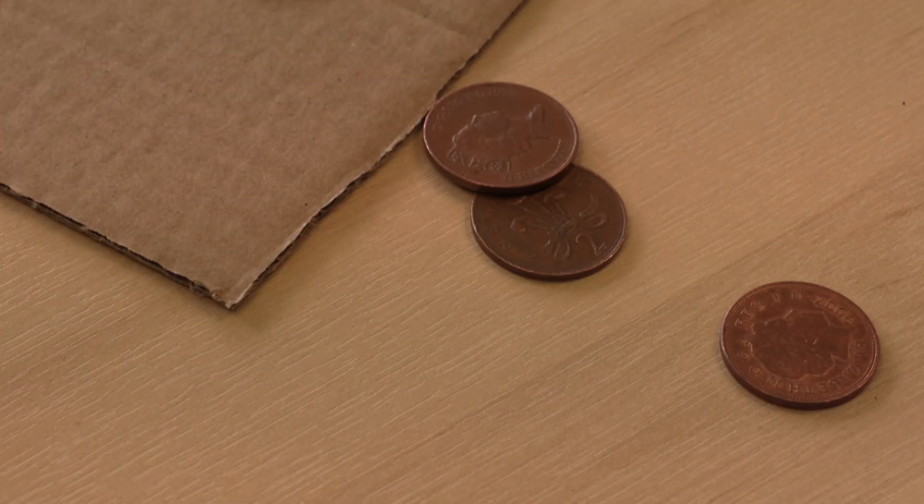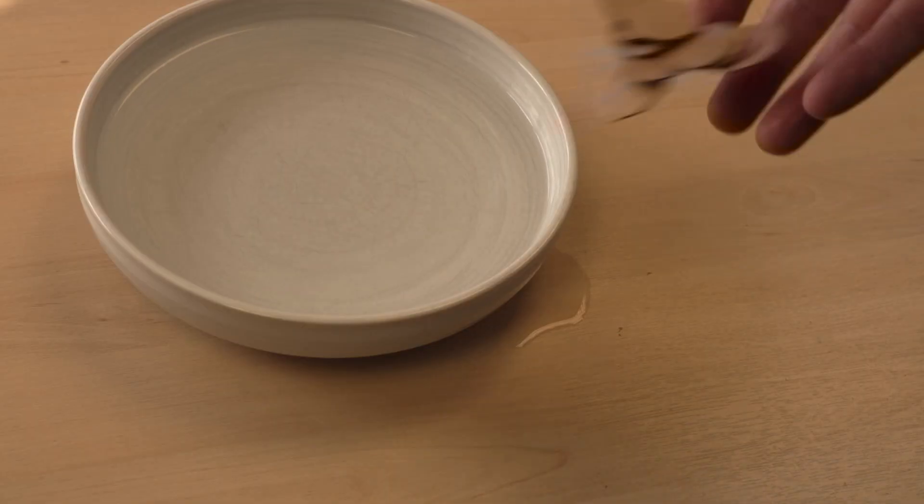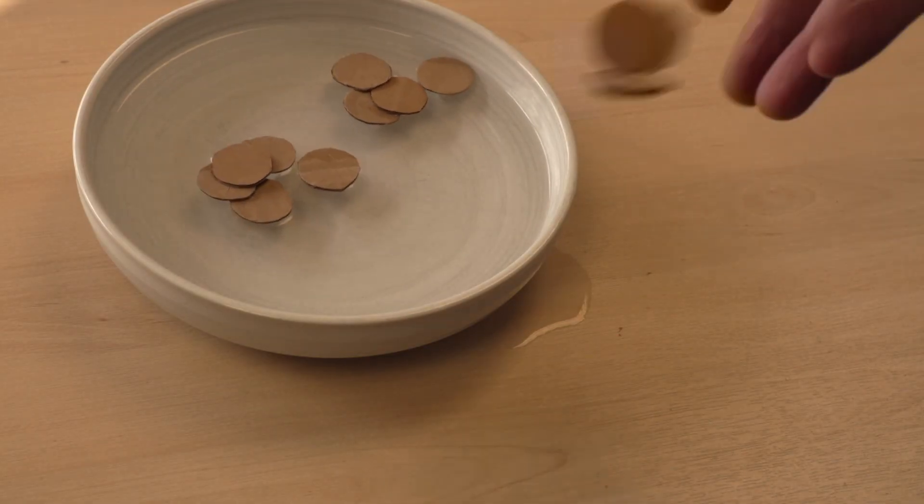All you need is some cardboard, some two-pence pieces and either aluminium foil or some zinc plated washers. You will also need some salty water. So just cut your cardboard into discs and soak them in the briny water.